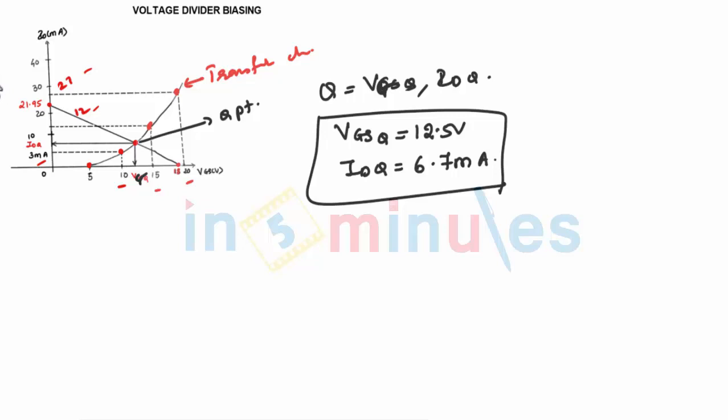When you substitute this in the equation of the output, that is VDS equals VDD minus ID into RD plus RS, you will get VDS as 14.406 volts. This is how we have found all the voltages and currents which was asked in the questions. Thank you for watching in five minutes.